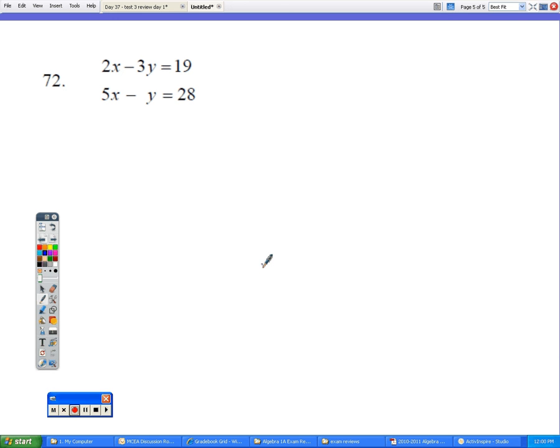Okay, 72, solve the system. We can see the system is set up for elimination because everything's lined up nicely.